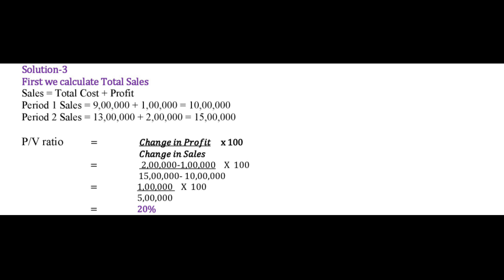After calculating sales, we now calculate the PV Ratio. The formula is: Change in Profit divided by Change in Sales, multiplied by 100. The change in profit — profit moved from 1 lakh rupee in Period 1 to 2 lakh rupee in Period 2 — so the change in profit is 1 lakh rupee. Similarly, sales in Period 1 were 10 lakh rupees and in Period 2 are 15 lakh rupees, so the change in sales is 5 lakh rupees.